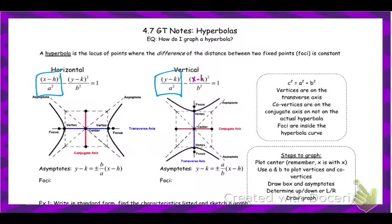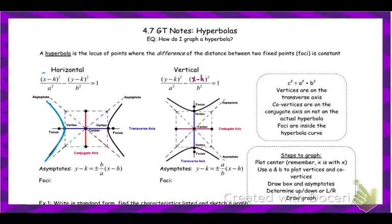If it's a horizontal hyperbola, the x is going to come before the minus sign. If it's a vertical hyperbola, then the y part is going to come first. There's a lot of stuff on this picture, but the only part that's actually the hyperbola is the part outlined in blue.